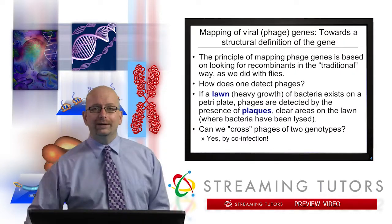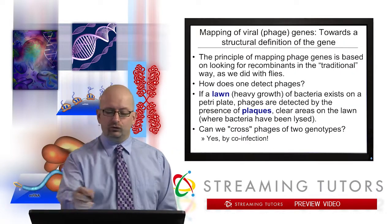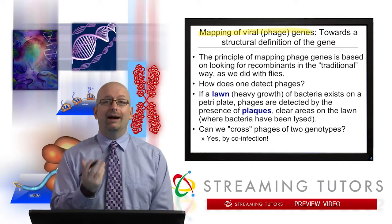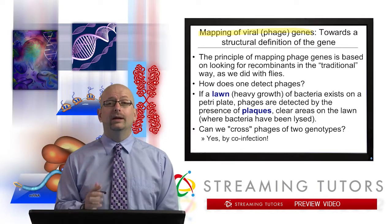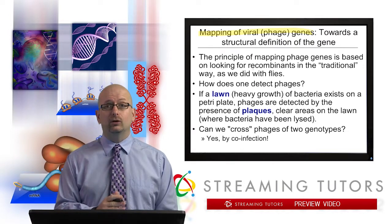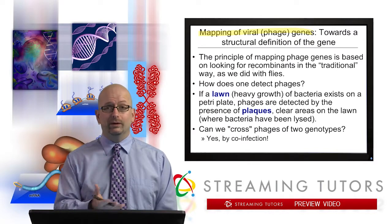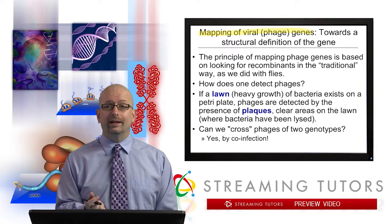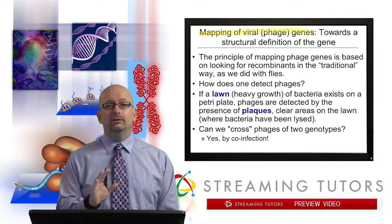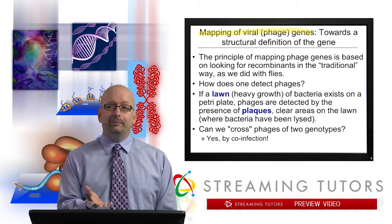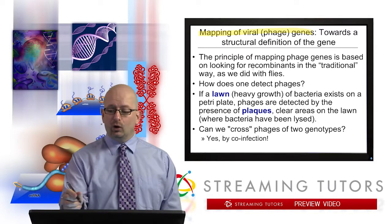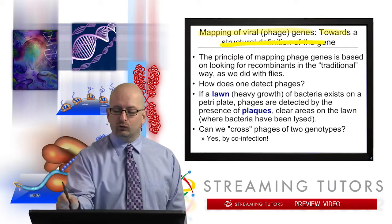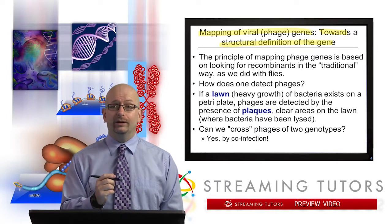The first thing we need to talk about is the general idea of mapping viral, or in this case, phage genes. A bacteriophage is a virus that infects bacteria. They're reasonably easy to work with because you can do it all in culture in the lab. There are many reasons you might want to map it, but in this case we're going towards a structural definition of the gene.